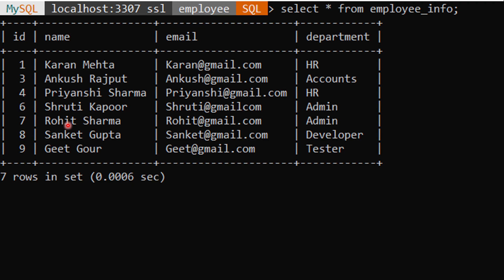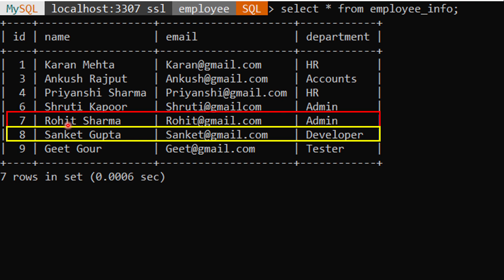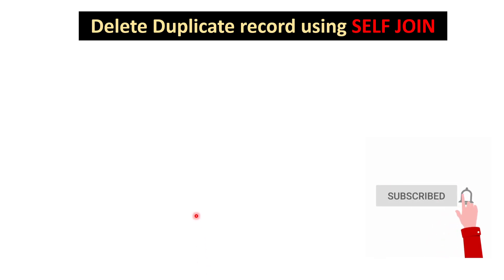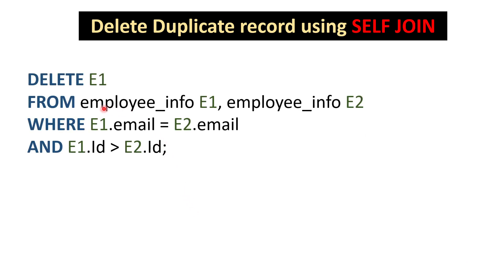In the next approach, we delete duplicate records using self join. In a self join, we compare a table with itself — here we compare employee_info with itself to find and delete duplicates. The query is: DELETE e1 FROM employee_info e1, employee_info e2, where e1 and e2 are temporary aliases for the same table. We then specify a condition to identify duplicates, such as matching on email, or on multiple columns like email and name, depending on your requirement.